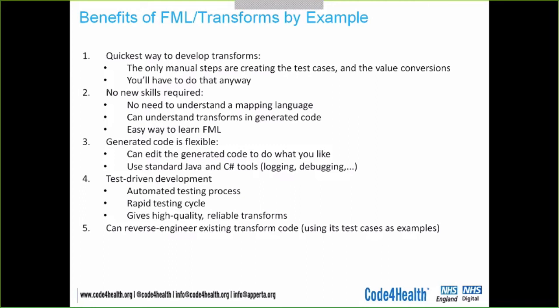This is a very test-driven style of development. You create your example pairs, run a test immediately — it takes just a few seconds — find where the transform doesn't quite do all you want, refine your example pair, and run the iterative cycle again. It's a very rapid testing cycle, which is a great way of getting high-quality, reliable transforms. Also, if you've already been developing transforms by another approach and have test cases — source and target pairs — you can use those as input to the transform-by-example method without losing your previous investment.